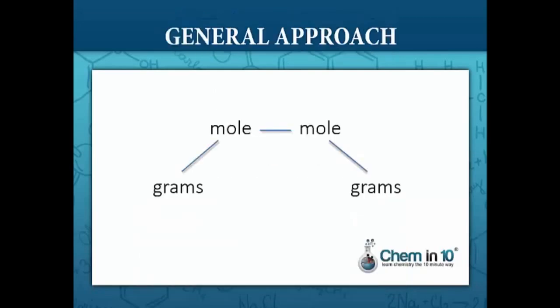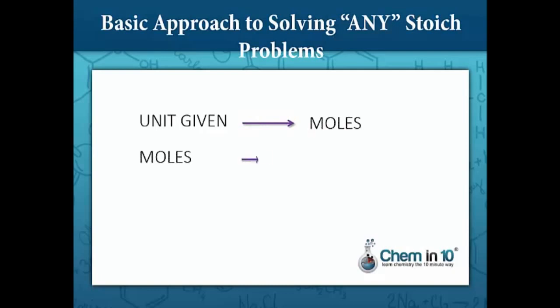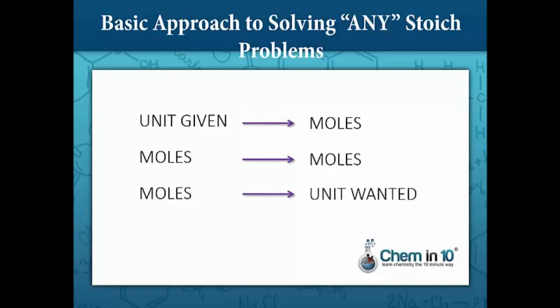The general approach is you go from grams of one substance to moles of that substance, then you convert it using a molar ratio to moles of another substance, and then you convert that to grams of that substance. We're going to use this basic approach to solve any type of stoichiometry problem. Start with the unit given, convert it to moles, convert those moles to moles of a second species in a balanced reaction, then convert to the unit wanted.